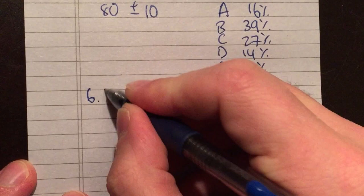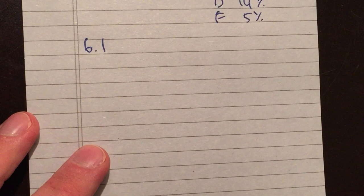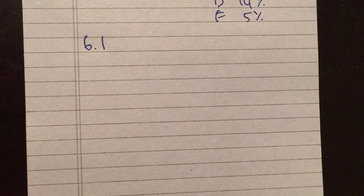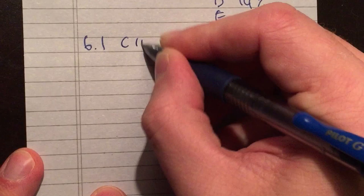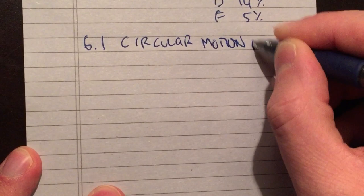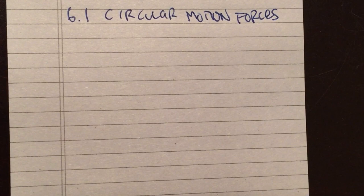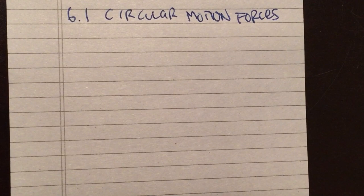Okay, so we're going to start in on chapter 6, which covers some interesting applications of the force laws from chapter 5. The first lecture in chapter 6 is going to be about circular motion force. We learned about circular motion back in chapter 4, where we decided that if you are moving in a circle at a constant speed, you must have a centripetal acceleration — an acceleration toward the center of that circle equal to v² over r, where v is the velocity and r is the radius.